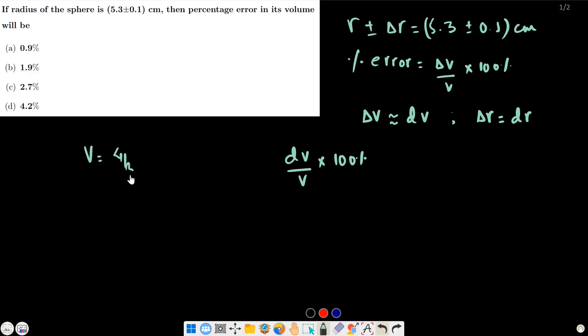Volume of sphere is 4 by 3 pi r cube. To find dV, we take the derivative with respect to r.